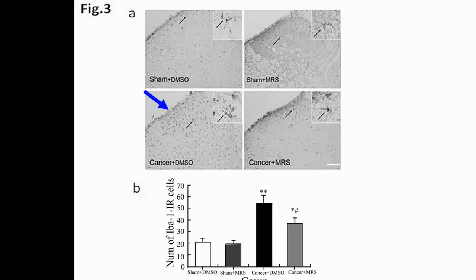We collected L4 to L6 segments of the spinal dorsal horn samples and performed immunohistochemistry analysis. The results indicated that microglial cells in the SHAM-DMSO and SHAM-MRS groups were not activated, as indicated by small cell bodies and more ramifications. The number of Iba-1-positive cells in the cancer-MRS group was significantly lower than in the cancer-DMSO group but still higher than in the SHAM-MRS group, indicating that microglial cell activation was partially inhibited by the antagonist.